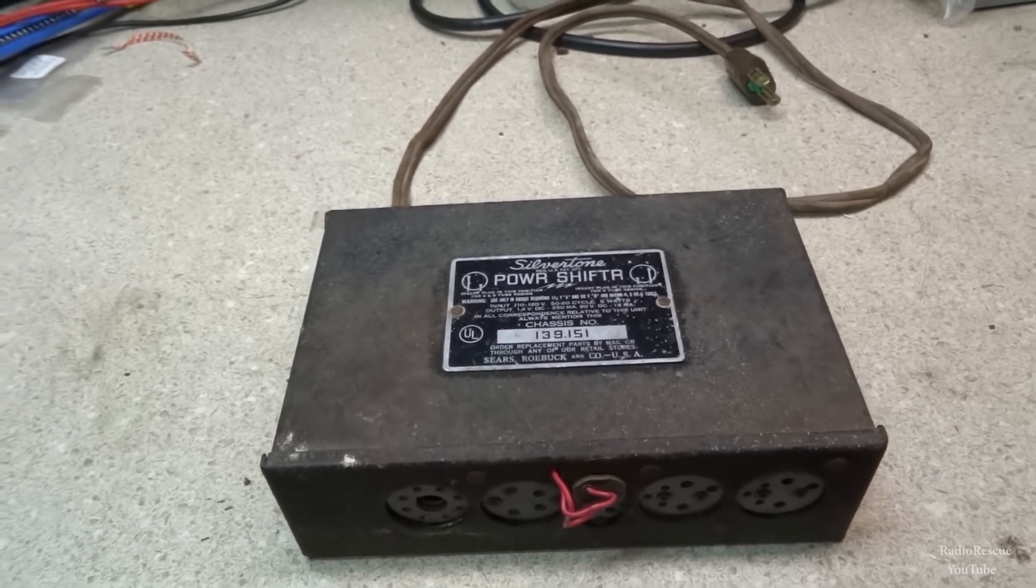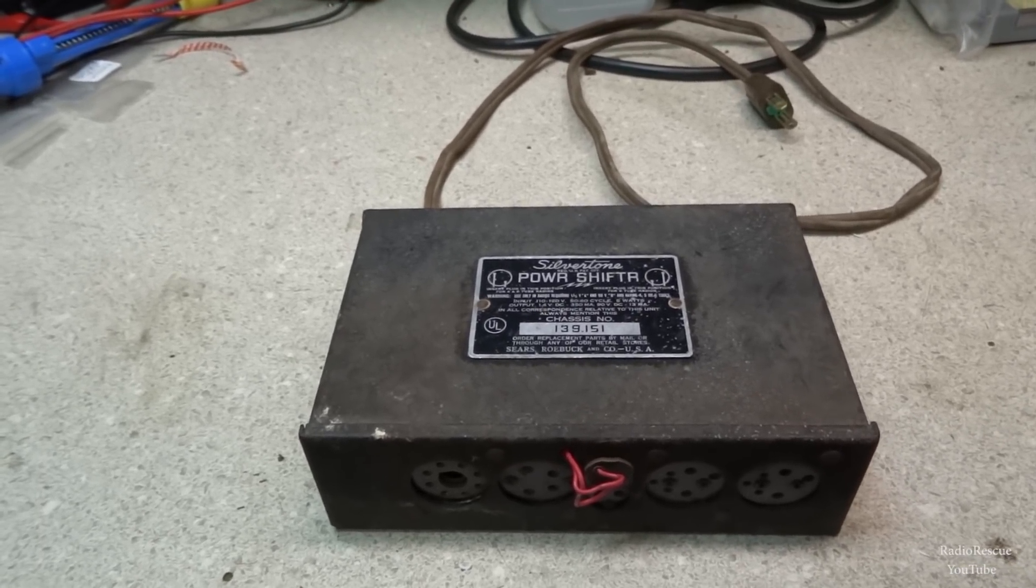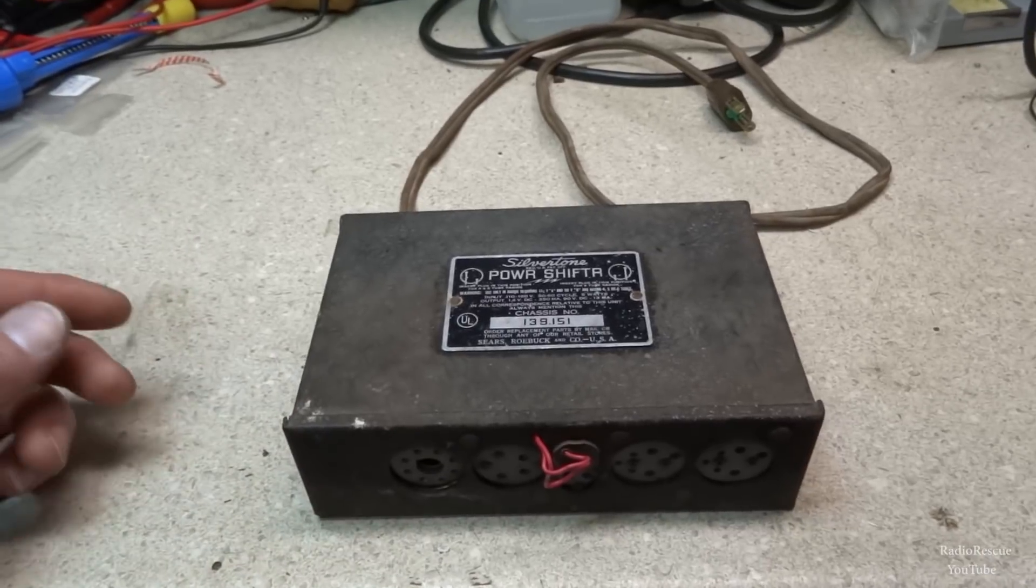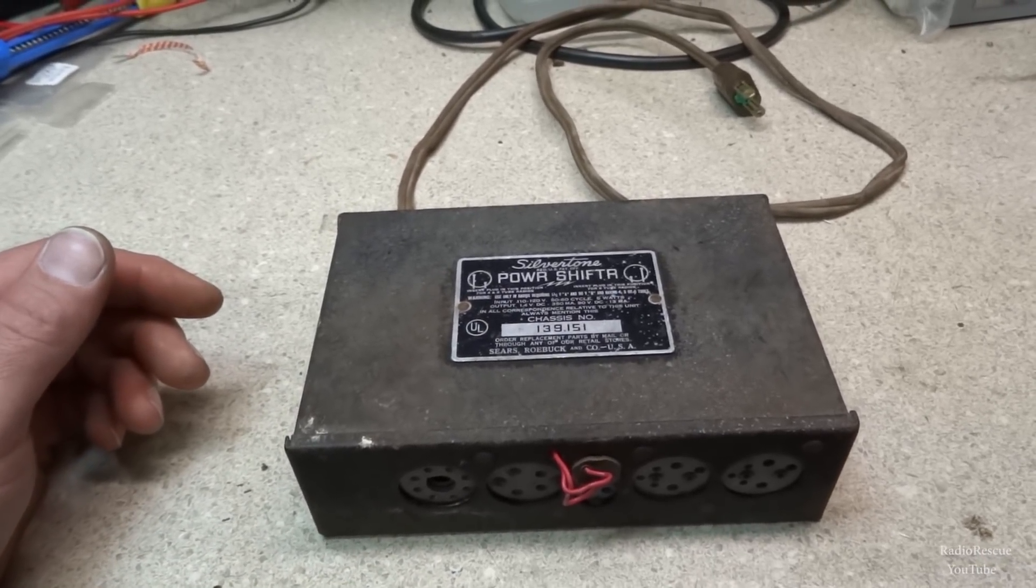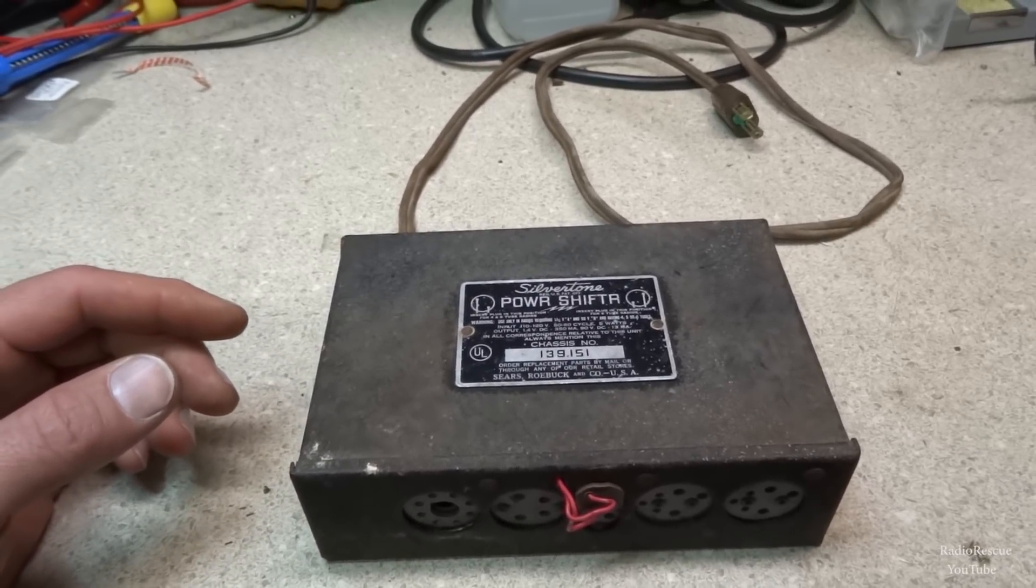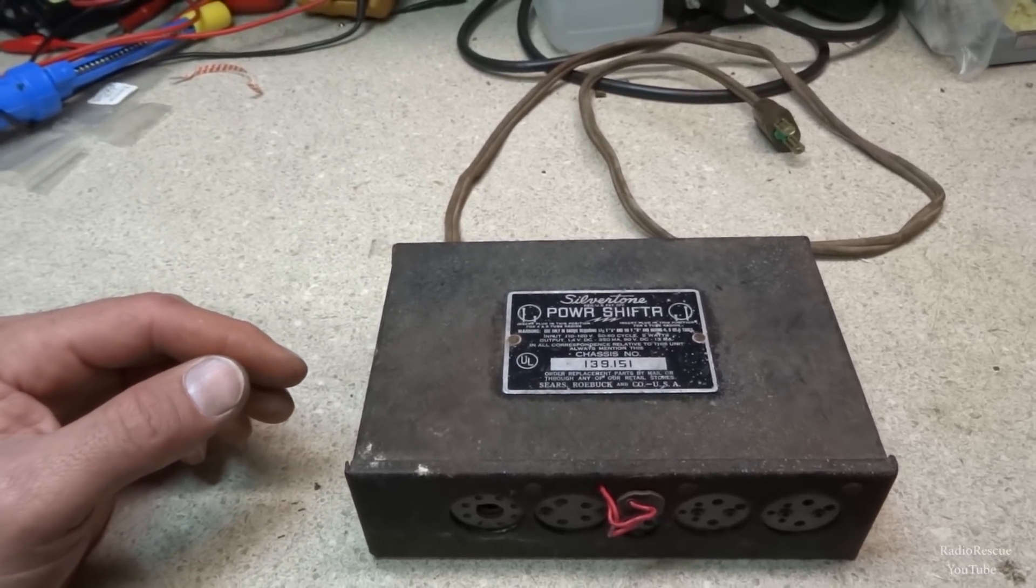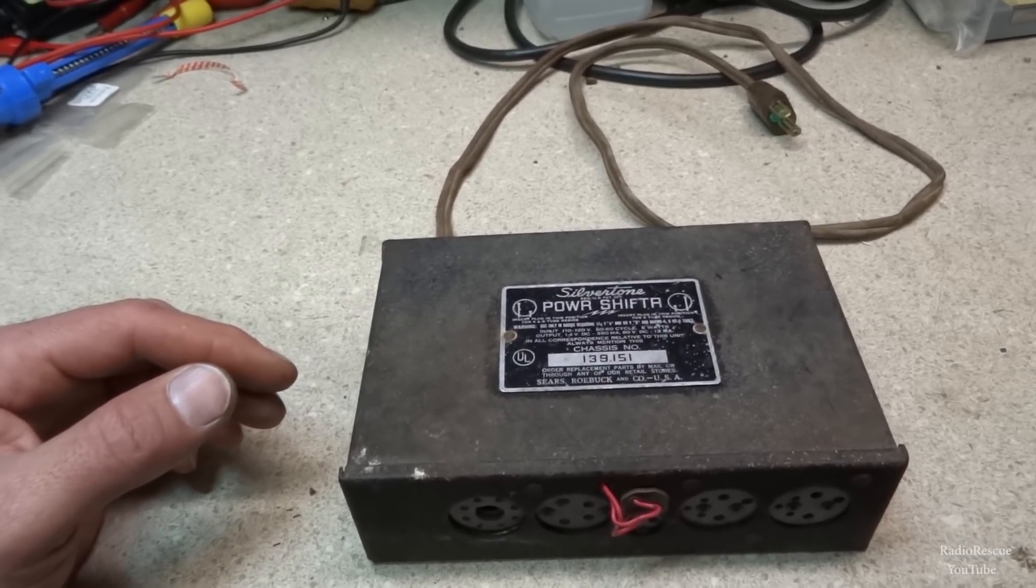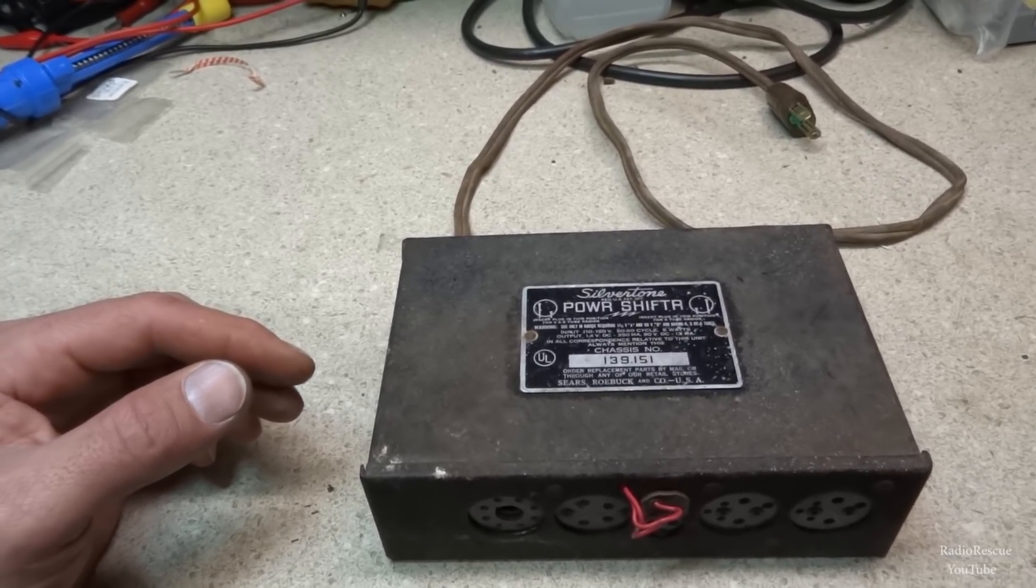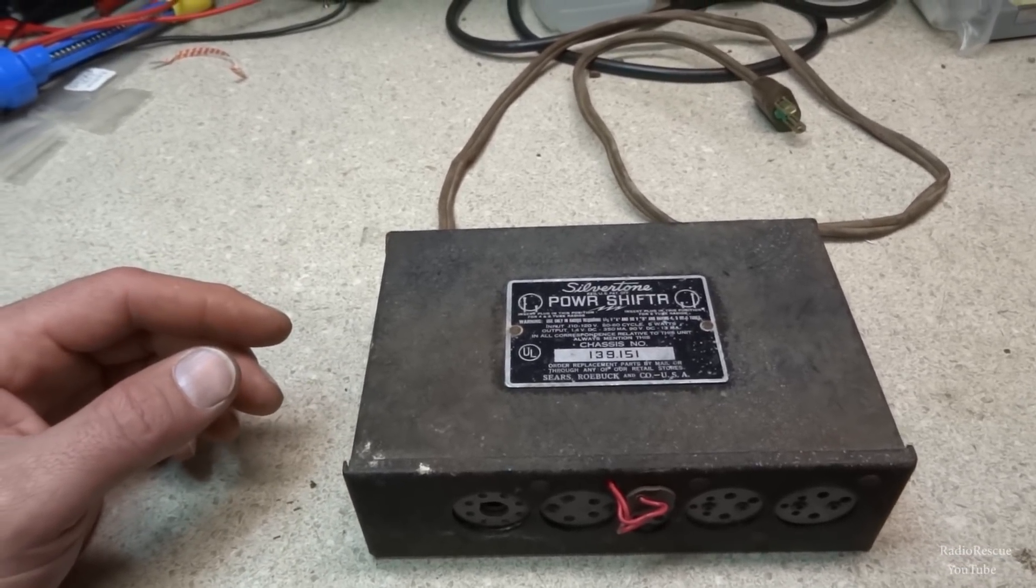It works about like any other power supply except it converts 110 volts into 90 volt B+ DC from AC to DC, and it also converts your 1.5 volt tube filaments from AC to DC as well. A lot of tube filaments in AC/DC sets run off AC, but as these radios were intended to be run off batteries, they're set up to run off DC, so this will convert your tube filament voltage into DC as well.